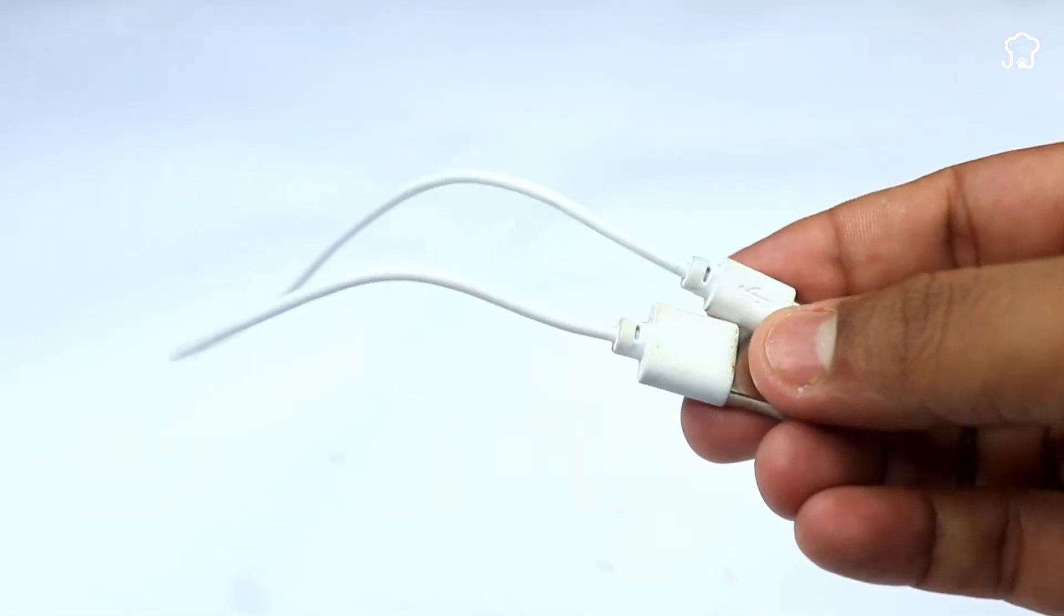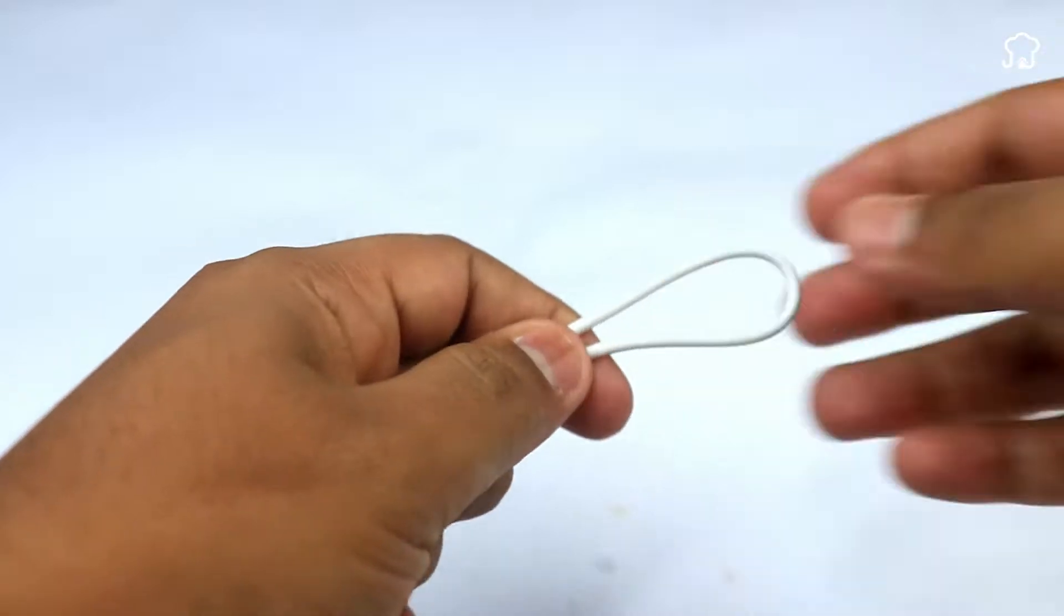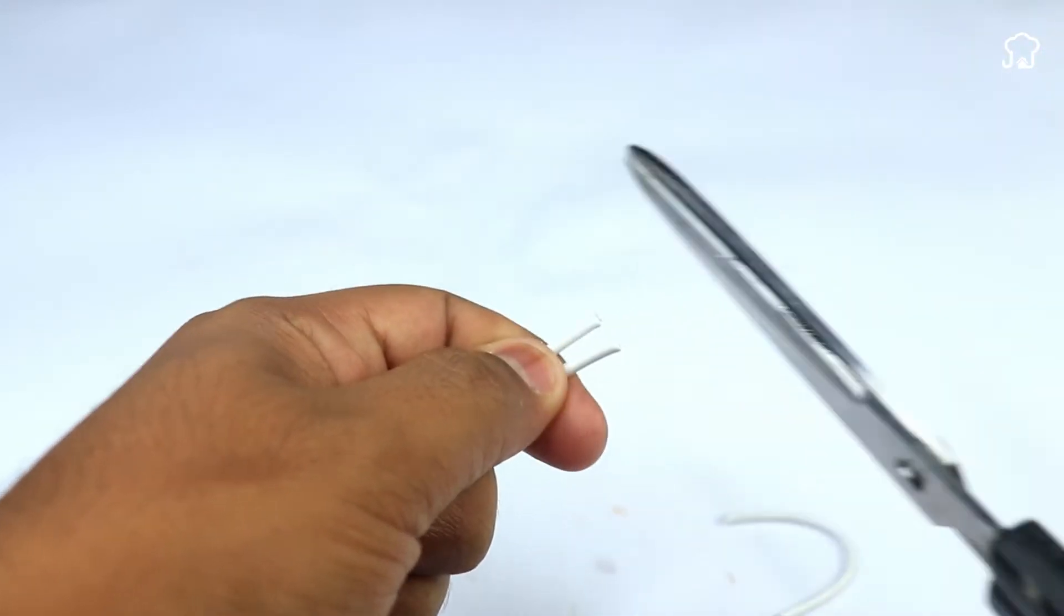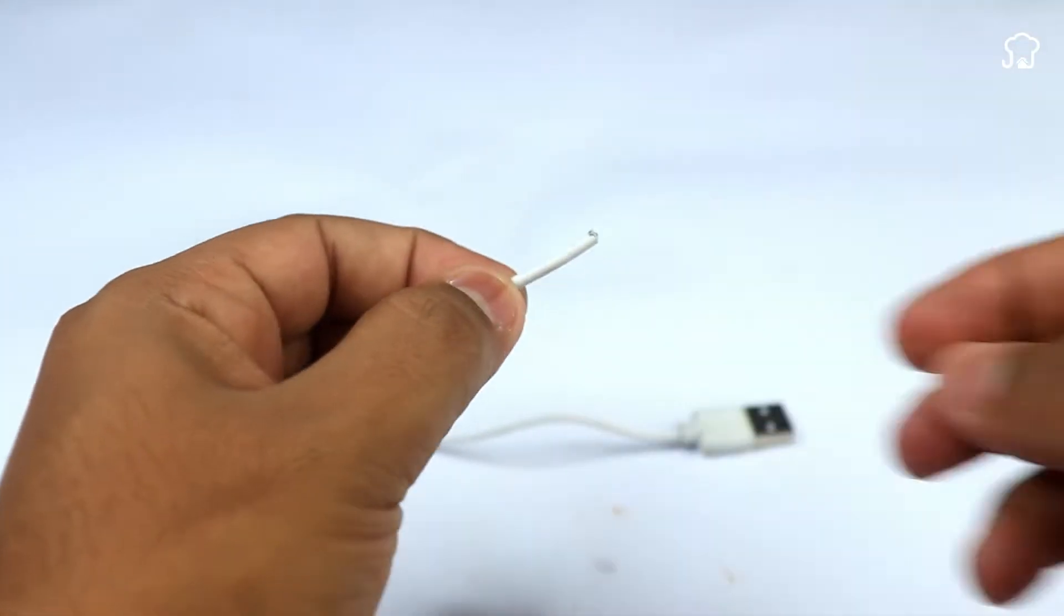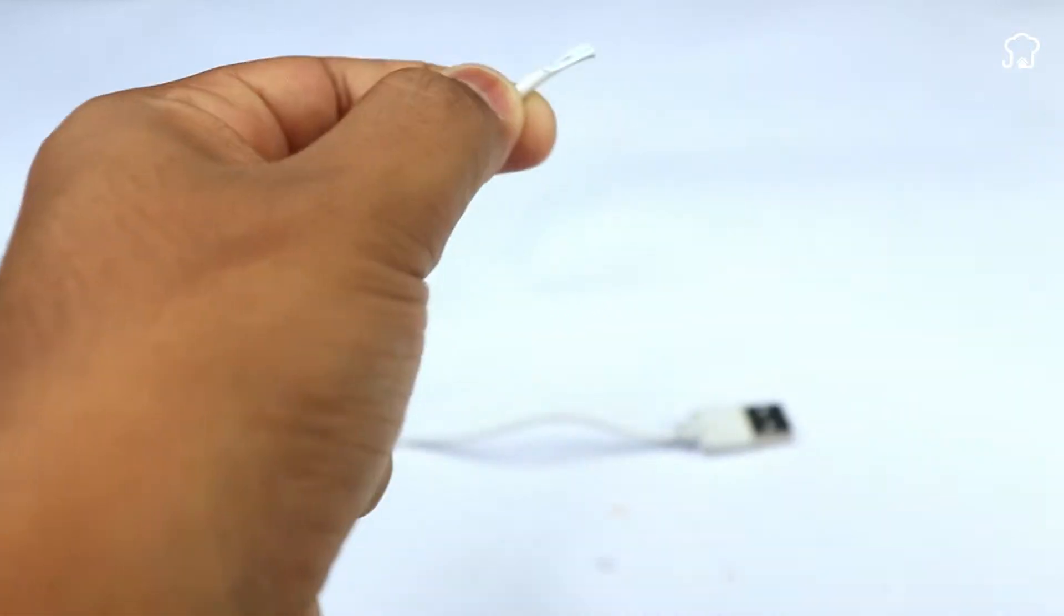First, take a standard cable and cut it in half using appropriate tools. Then, carefully peel the plastic cover from each end of the cable using a cutter for this purpose.